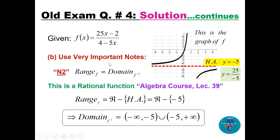Now with m = 25 the function is f(x) = (25x − 2)/(4 − 5x). To find the domain of the inverse, we find the range of f. This rational function has a horizontal asymptote at y = 25/(−5) = −5, so the range of f — and therefore the domain of f⁻¹ — is all real numbers except −5, written as (−∞, −5) ∪ (−5, ∞).